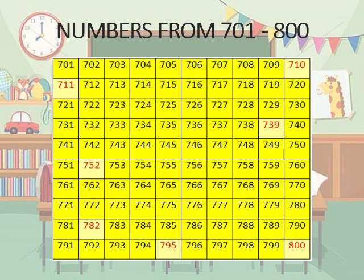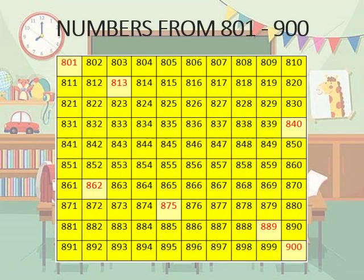Now the series from 601 up to 700 is displayed. In this slide, numbers from 701 to 800 are shown. Then comes 801 up to 900.